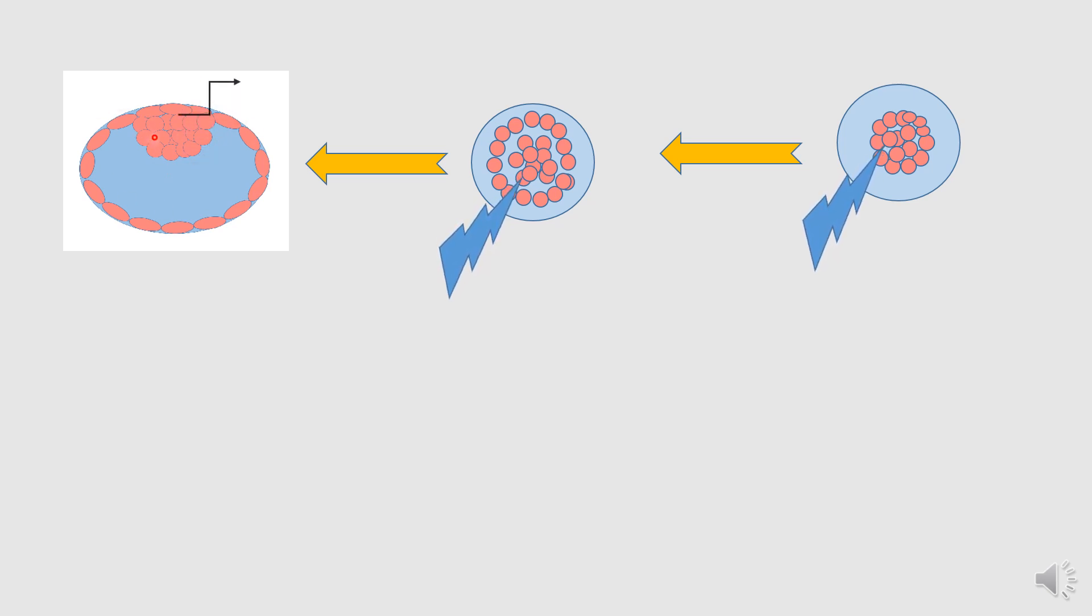And that end is called the embryonic pole to where the inner cell mass get attached. And the opposite side is called the abembryonic pole. So, this embryonic pole has one more name that is the animal pole. It is also called animal pole. Now, children, what happens is that this cavity within is called the blastocyst.